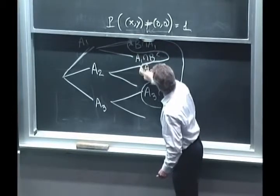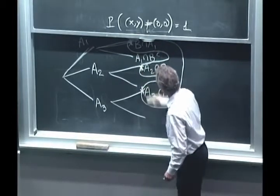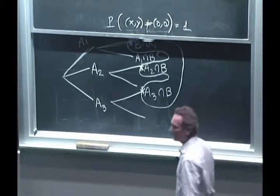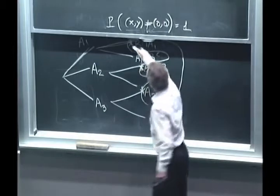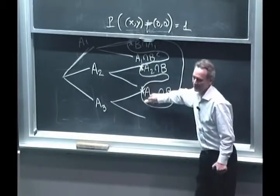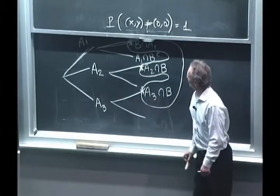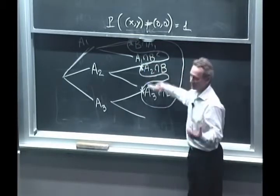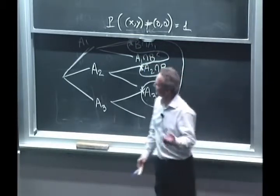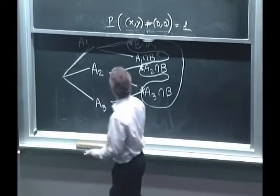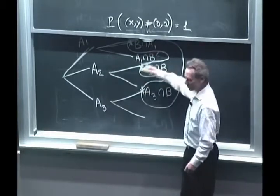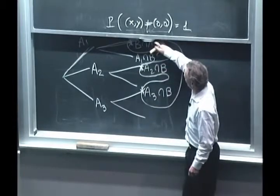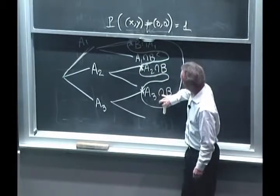It consists of three elements. To calculate the total probability of our event B, all we need to do is to add these three probabilities. So B is an event that consists of these three elements. There are three ways that B can happen. Either B happens together with A1, or B happens together with A2, or B happens together with A3. So we need to add the probabilities of these three contingencies.